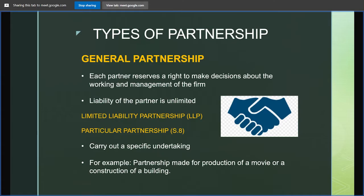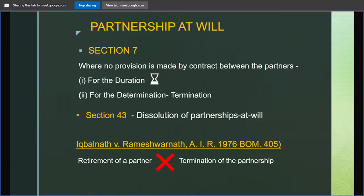Now we have partnership at will. Sections 7 and 43 of the Indian Partnership Act deal with partnership at will. If the contract of the partnership does not contain the duration of the partnership or how that partnership will be terminated, then that partnership is termed as partnership at will. The Supreme Court also iterated that these two things determine partnership at will. Under Section 43, a partner can give notice to other partners and dissolve the firm from the date of notice. In the case of Iqbal Nath versus Rameswar Nath, the Supreme Court iterated that retirement of a partner is not equivalent to termination of the partnership.